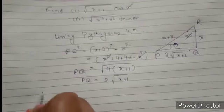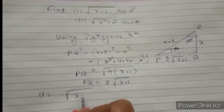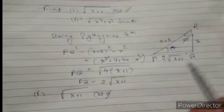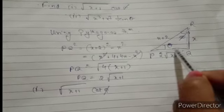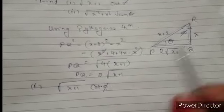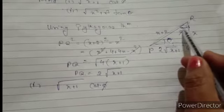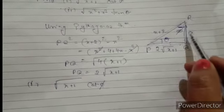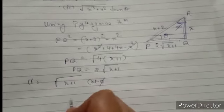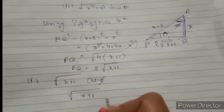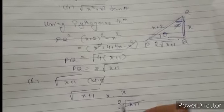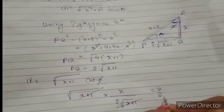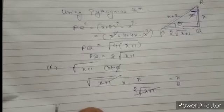Now taking the first part: we have to find root(x+1)·cot φ. Angle φ is at vertex R, so for angle φ, the base is PQ = 2√(x+1), the perpendicular is PQ side, and the hypotenuse is PR = x+2. cot φ = base/perpendicular. Substituting: √(x+1) × (x / 2√(x+1)). The √(x+1) terms cancel, giving the value x+2... actually the answer is x/2 simplified — the result is x+2 upon 2, so the answer is (x+2)/2.